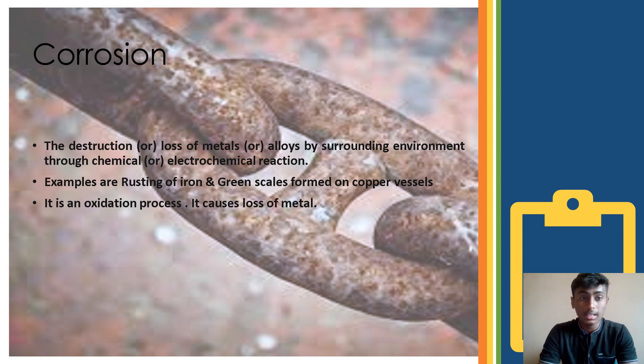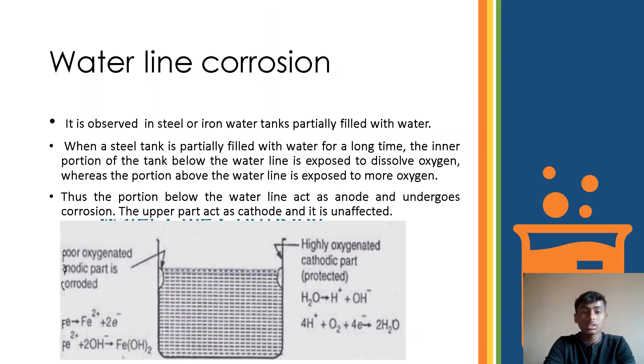As I said, corrosion is simply called loss of metal. Water line corrosion is observed in iron or steel water tanks when partially filled with water for a long duration. When the inner portion of the tank below the water line is less exposed to water, it is an anode part.